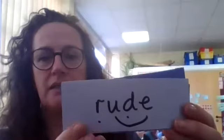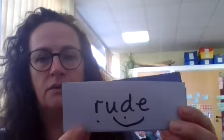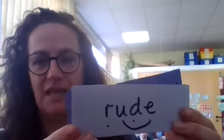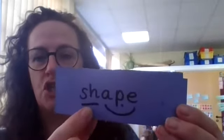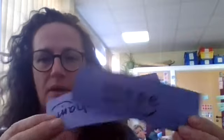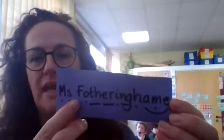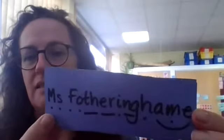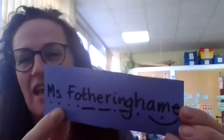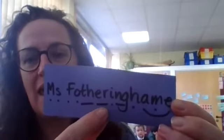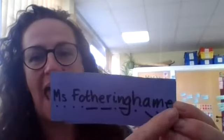Next word. R, U, D. Rude. How rude, Mrs Bedford says. We've got an upside down one here. Sh, A, P. Shape. Oh, here's a really long word - in fact, there's two words. It's somebody's name because there's a capital letter here. M - it is my name. Miss Fotheringheim. And you're right because the A sound at the end of my name is made by a split digraph.